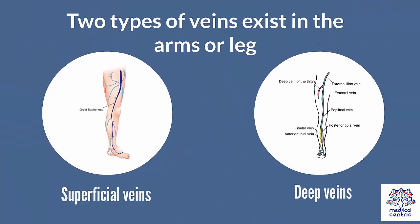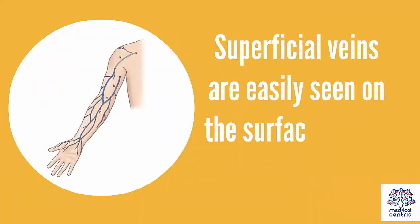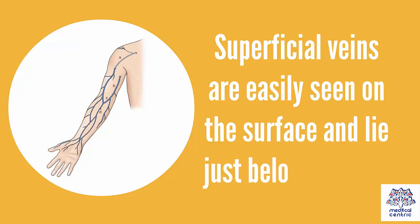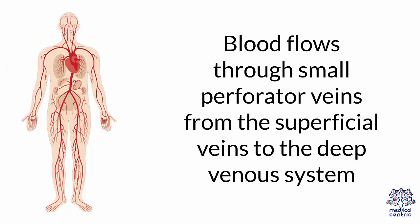Two types of veins exist in the arms or leg: superficial veins and deep veins. Superficial veins are easily seen on the surface and lie just below the skin, while the deep veins are located deep within the muscles of the arms or leg. Blood flows through small perforator veins from the superficial veins to the deep venous system.